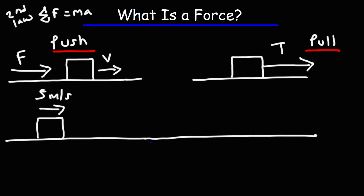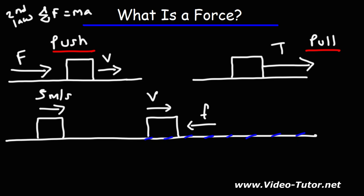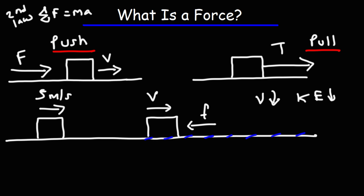But let's extend this — at some point, the block encounters significant friction. Friction is going to oppose the block, and because the velocity and friction vectors are opposite to each other, friction is going to slow the block down. So friction, being a force acting on this object, is decreasing its kinetic energy. Energy is being transferred from the block to the surface in the form of thermal energy. When the velocity and force vectors are opposite to each other, the object slows down and loses kinetic energy — that energy is transferred as heat energy.